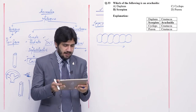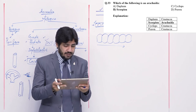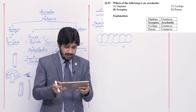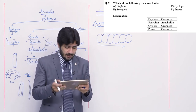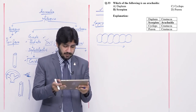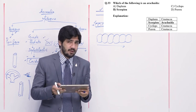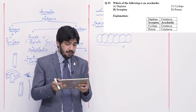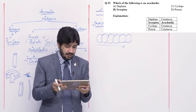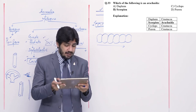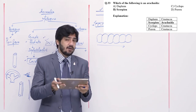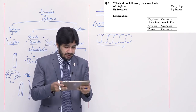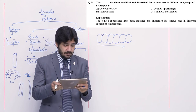Question number 33: which of the following is an arachnid — alpha Daphnia, beta scorpion, charlie Cyclops, and delta prawn? Arachnida is represented by beta — scorpion. Alpha, charlie, and delta are crustaceans.